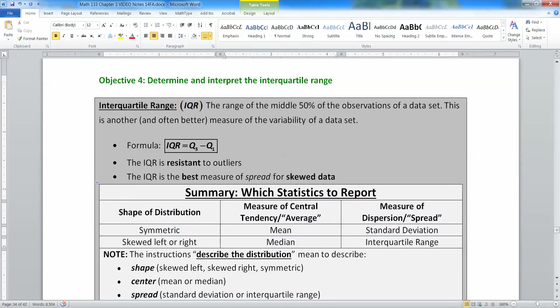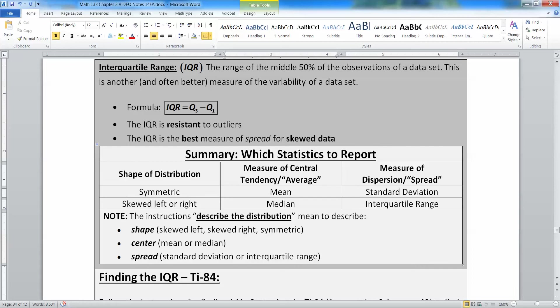All right, so let's look at this real quickly in a summary report. If the shape of your distribution is symmetric, then your best measure of central tendency is the mean and the best measure of dispersion is your standard deviation or your variance, depending on what you're trying to do. If the shape of your distribution is skewed left or skewed right, then you're better off with the median because the median is resistant to that skewing. And then you're better off with the IQR, the interquartile range, because it also is resistant.